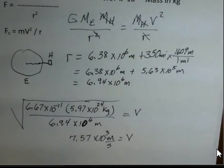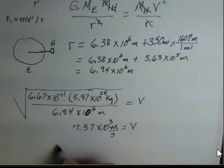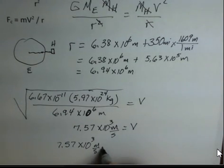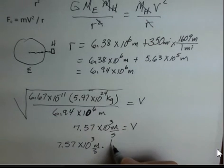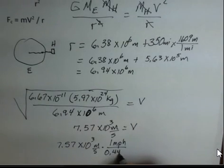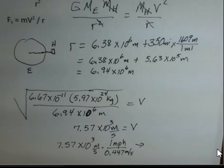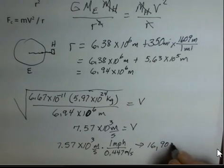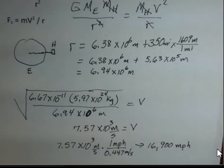And I didn't do this ahead of time, but I'm going to convert this into miles per hour. 7.57 times 10 to the 3rd meters per second. Our conversion factor is 1 mile per hour is 0.447 meters per second. So I have to turn on my calculator here and do 7.57, 10 to the 3rd, divided by 0.447. And I'm coming up with around 16,900 miles per hour. That's orbital speed for something in orbit around the Earth.